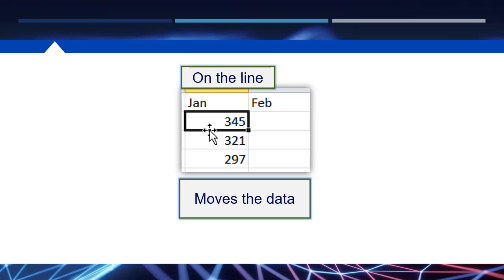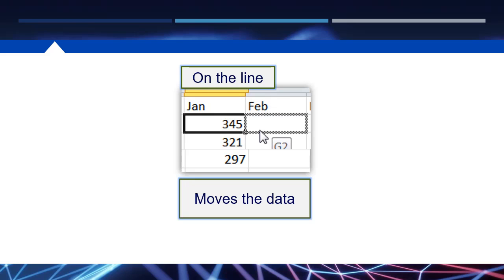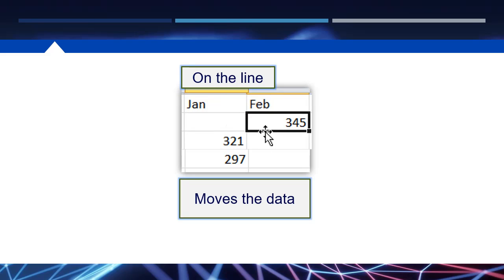However, if you put your cursor on the line, you can see it's an arrow with four-sided arrows on it. And when you click on that and move it, you will actually move the data. So those are two different kinds of options when you click and drag.